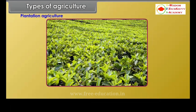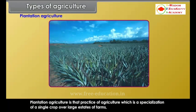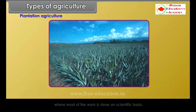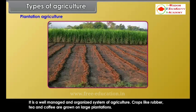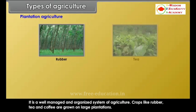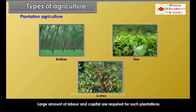Plantation agriculture is basically a commercial type of farming and a monoculture, found in the tropical region. It involves specialization of a single crop over large estates where most of the work is done on a scientific basis. It is a well-managed and organized system of agriculture. Crops like rubber, tea and coffee are grown on large plantations, requiring large amounts of labor and capital.